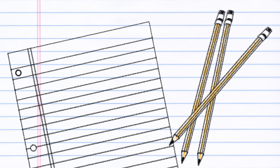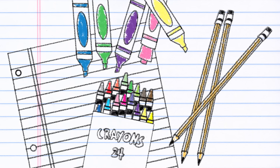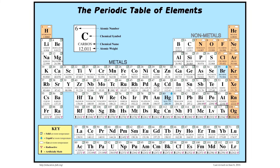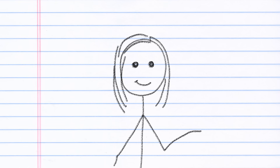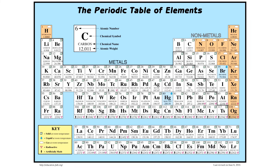In addition to paper, pencils, crayons, markers, or whatever you're going to use to make the drawing, you're going to need a copy of the periodic table of elements. You can download one from our site, or use one of the thousands of others you can find online. Once you have one, it's time to pick an element. Since we use it all the time, we're going to pick nitrogen.